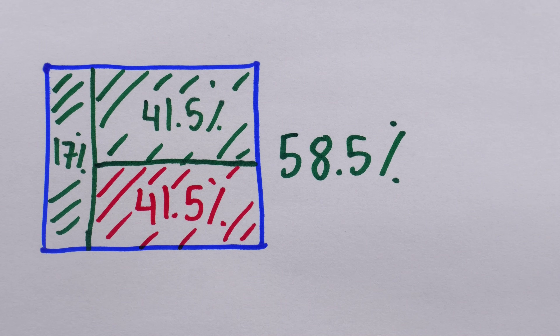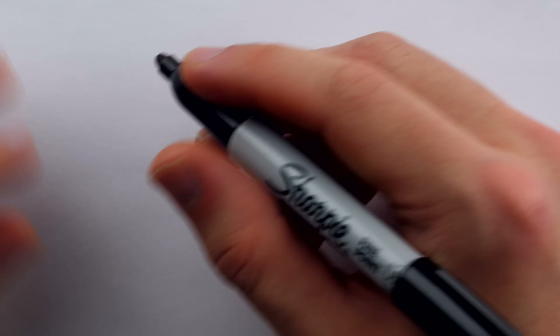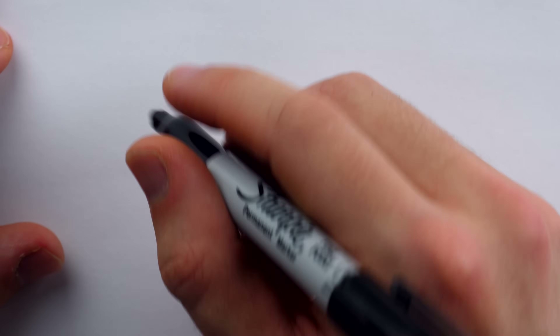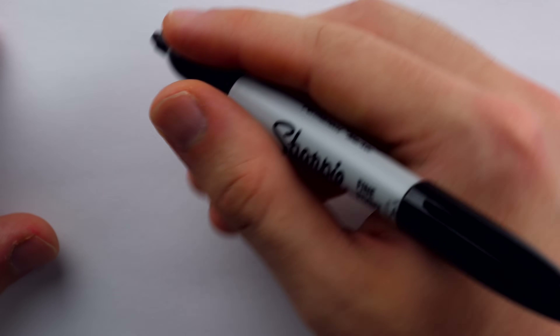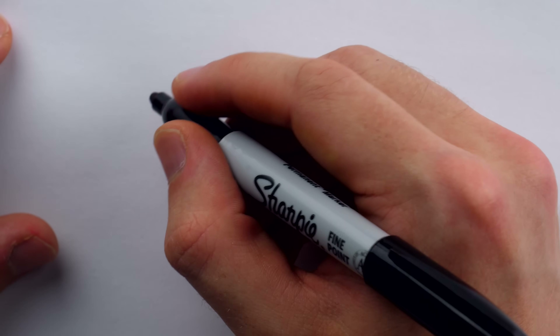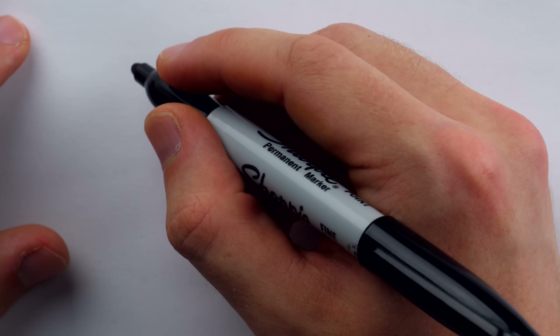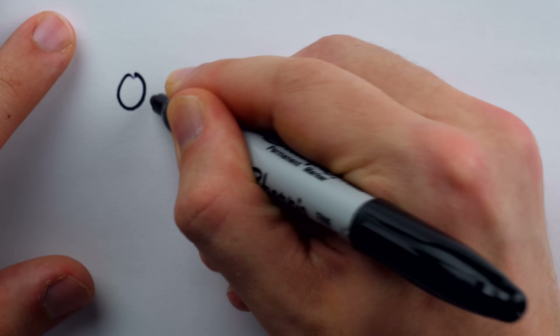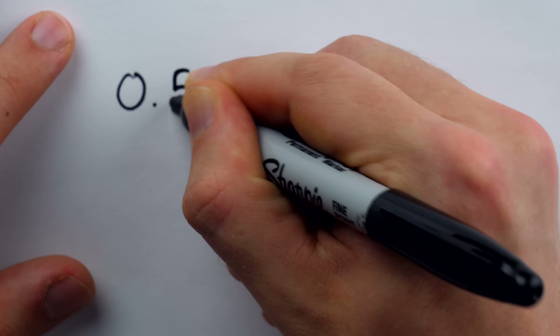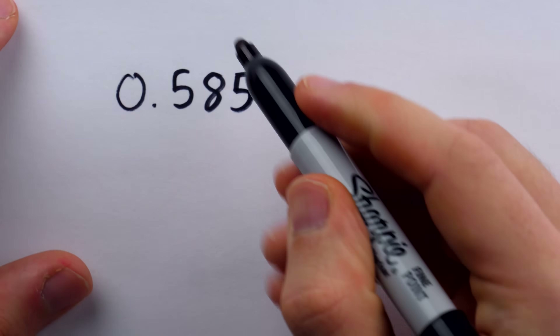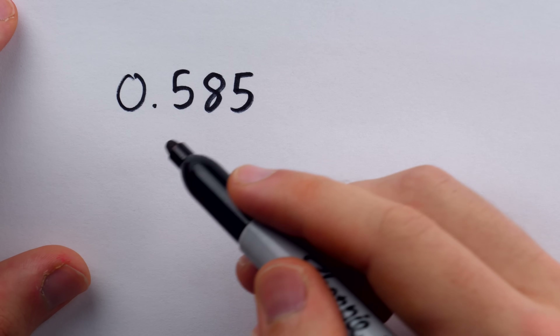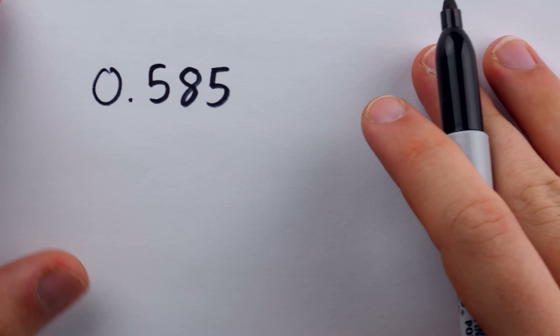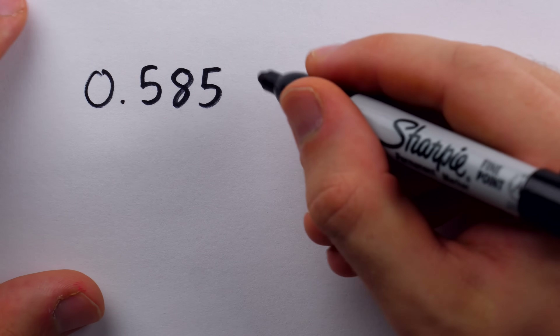Why else would we be given that information? From the picture we just drew, we saw there's a 0.585 probability that we get the first question correct, and then we go through the same logic for question two.